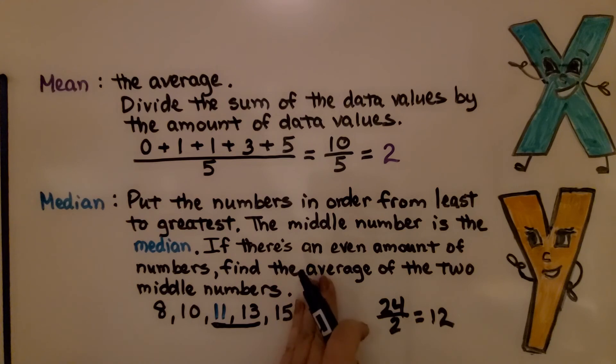We added two values together, so we're going to divide it by 2. That means our median is 12. When there's an odd number, we just choose the center number. When there's an even amount, we choose the two in the middle and we find the average of those two. So that's mean and median.